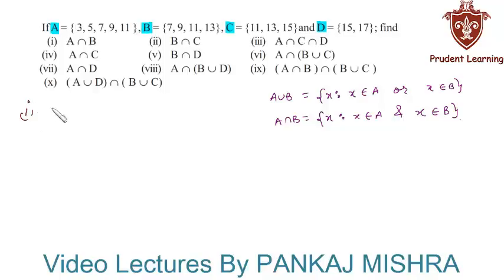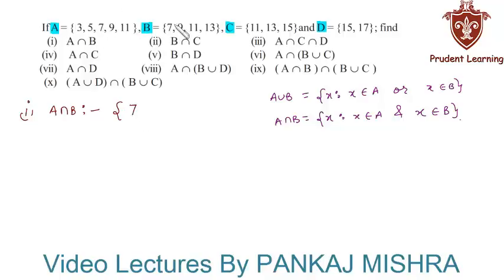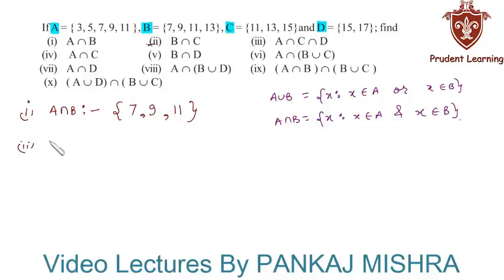In the first section we have A intersection B. A intersection B is nothing but the set of all elements that are common to both set A and set B. So this will be the set containing elements 7, since 7 is common to both set A and set B, and also 9 and 11. These three elements are common to both sets, so A intersection B = {7, 9, 11}.